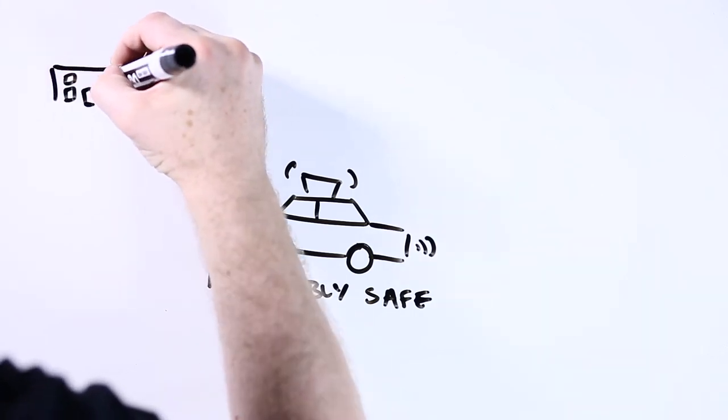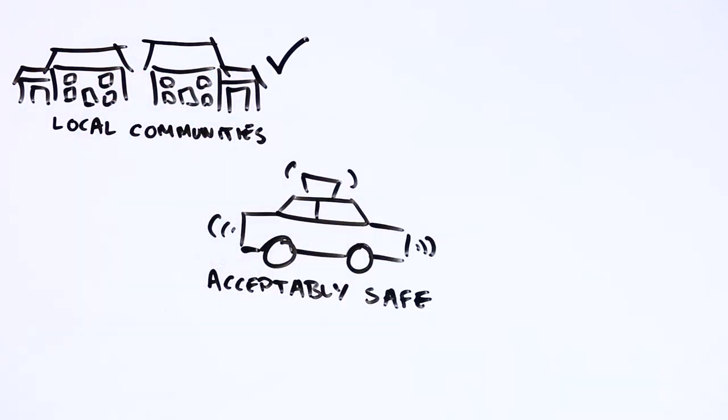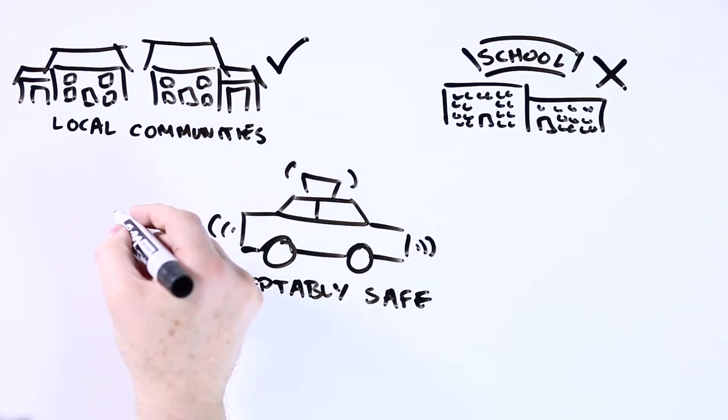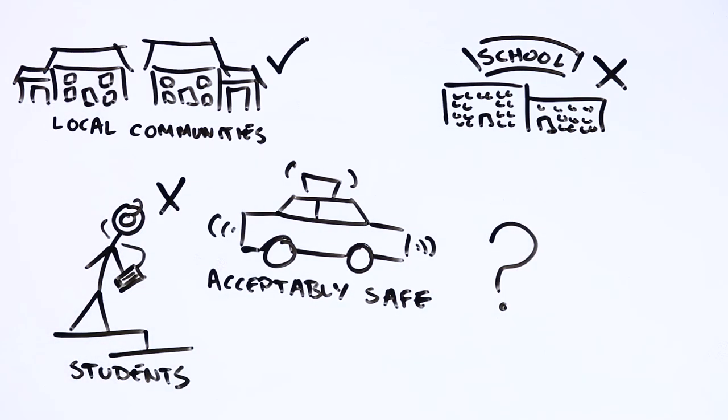For instance, it may be decided that testing around residential areas is OK, but not around schools. Or it may be agreed that testing where pedestrians are likely to be paying less attention, college campuses for instance, is not such a good idea.